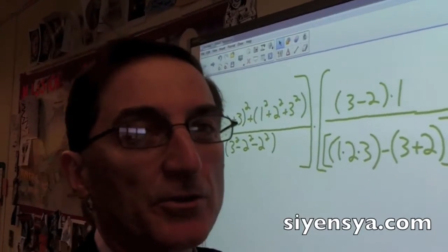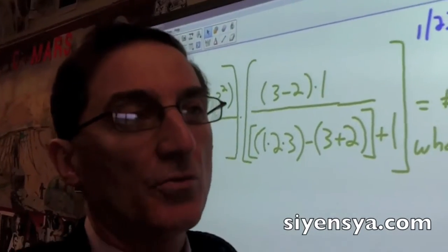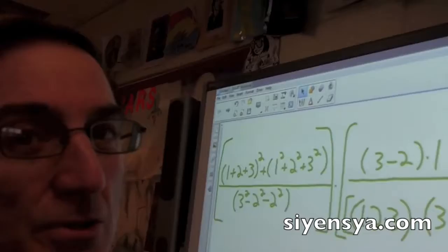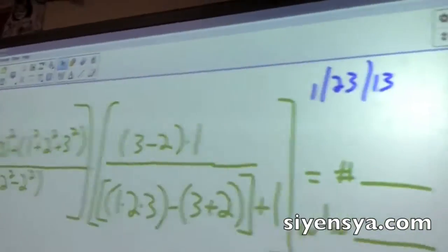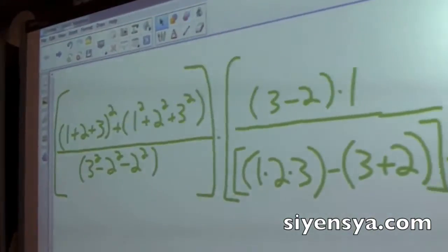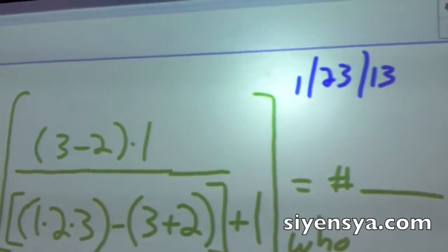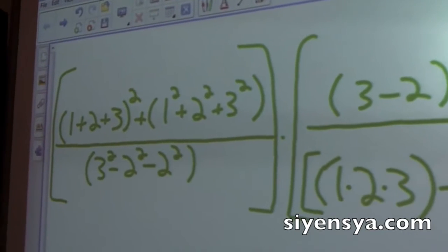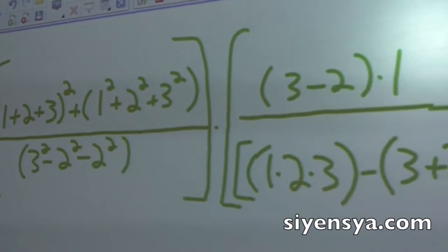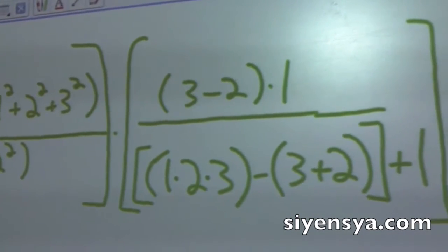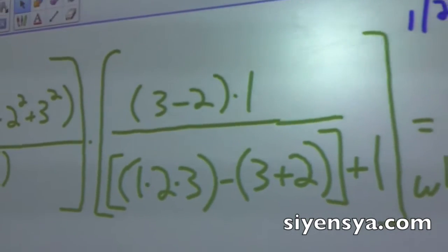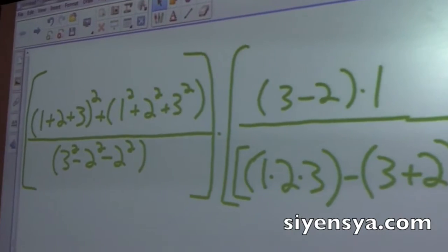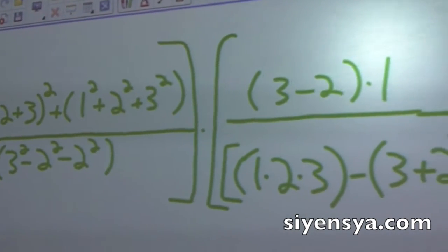Today is January 23rd, so the numbers are 1, 2, 3. And as you can see here, I've taken the 1, 2, 3 and put it into a problem. And here the numbers are small, but what the students need to do is use the order of operations.